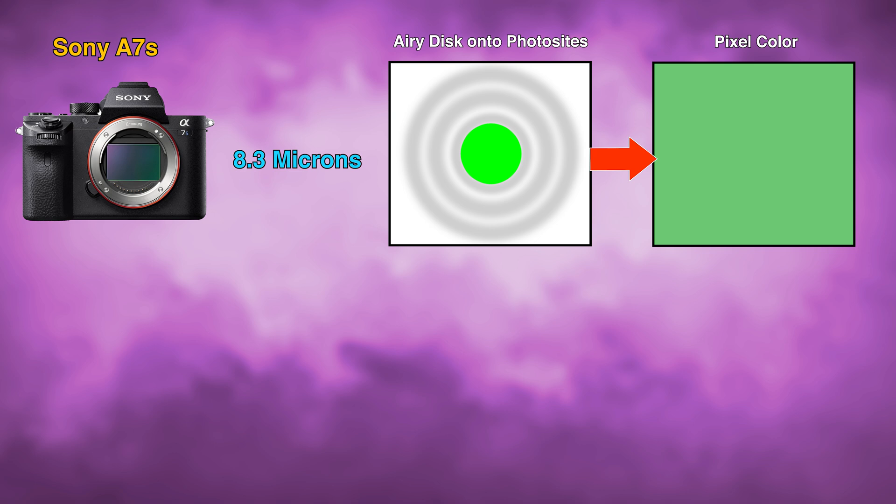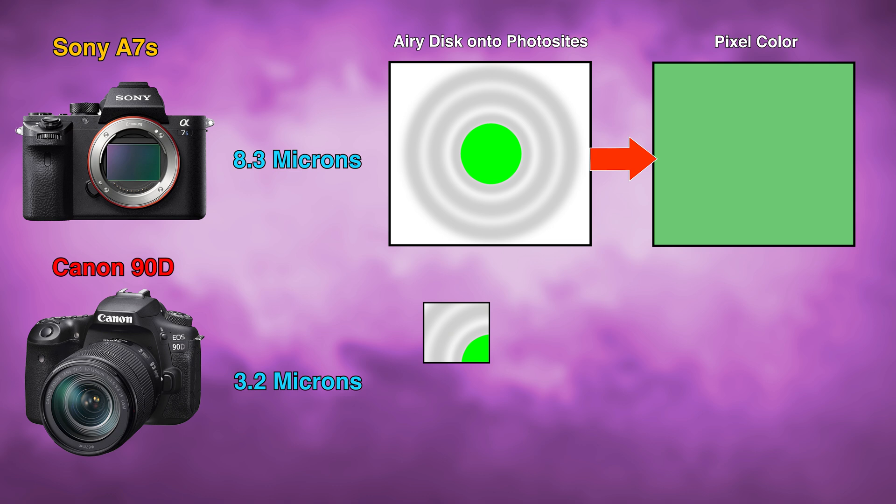When we take a look at that same point of light being captured with something like the Canon 90D that has a very tight pixel pitch, 3.2 microns, the airy disk is captured in a fragmented manner. The photo site is too small to capture that point of light with that resolving lens.